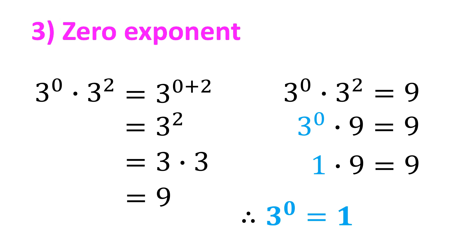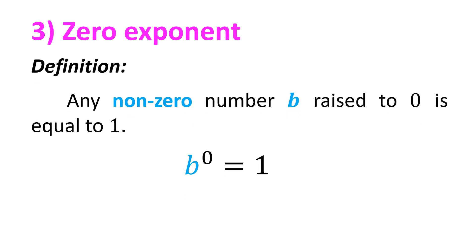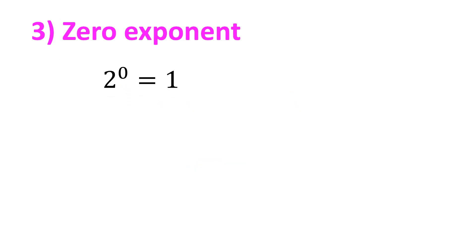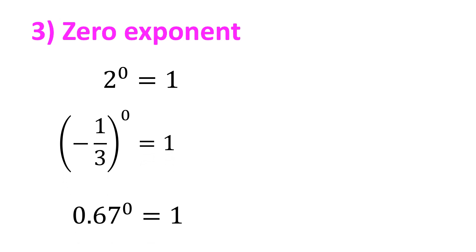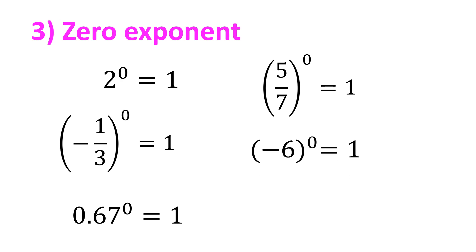This leads us to the following definition: any non-zero number B raised to 0 is equal to 1. For example, 2 raised to 0 equals 1. Negative 1 third raised to 0 equals 1. 0.67 raised to 0 equals 1. 5 over 7 raised to 0 equals 1. Negative 6 raised to 0 equals 1. But take note that 0 raised to 0 is undefined.